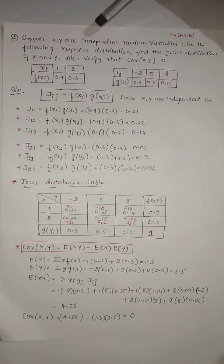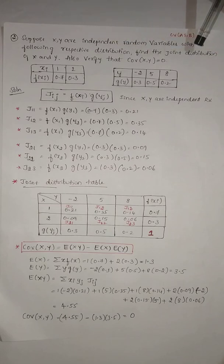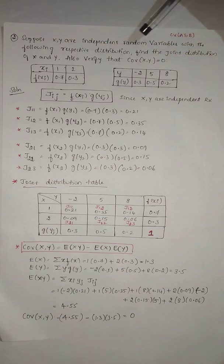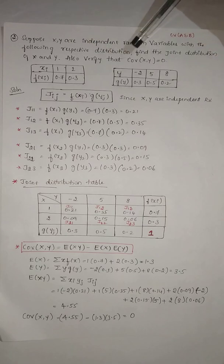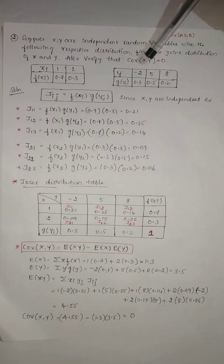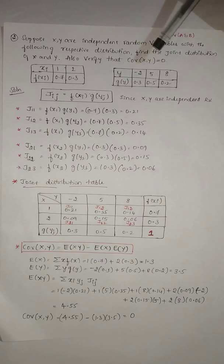In this video, we will solve one problem on joint probability distribution. The problem is: suppose x and y are independent random variables with the following respective distributions. Find the joint distribution of x and y, and also verify that the covariance of x and y is equal to 0.